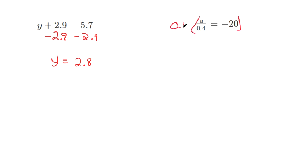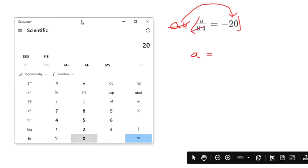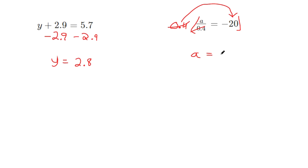So I'm going to multiply both sides by 0.4 to get rid of it over here. But what I do to one side I have to do to the other. So if you take out your calculator and if you do negative 20 times 0.4 that gives you negative 8 for a.